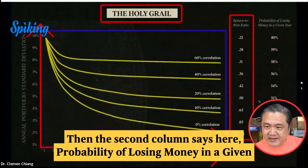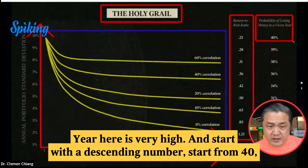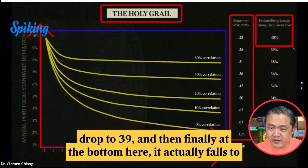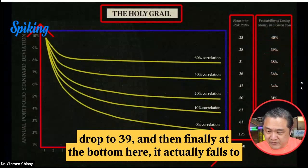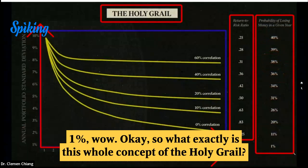The second column says probability of losing money in a given year. Here it is very high and starts with a descending number, starting from 40, dropping to 39, and then finally at the bottom it actually falls to 1%. Wow.